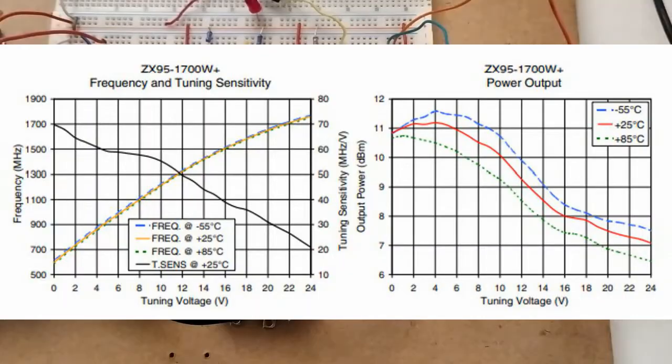So on our VCO performance specs, we see that VTune is anywhere from 0 to 24V. But the modulator in MIT's design generates a triangle signal from 1 to 7V. And if we were to hook this up to our VTune terminal, that would correspond to a frequency output of roughly 600 to 1000MHz.